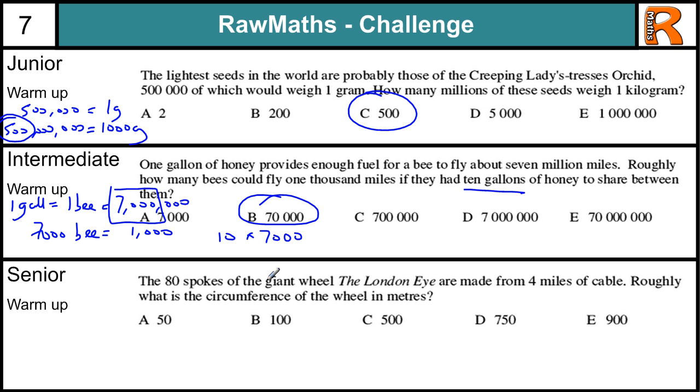The senior warm-up. 80 spokes of the London Eye make up 4 miles of cable. We've got to change this into meters. So 80 equals 4 miles. So one spoke is going to equal 4 over 80 miles, which is 1 over 20. Now on the London Eye, or on any wheel, the spokes are equal to the radius of the wheel. And to work out the circumference of the wheel all the way around the outside, we need the formula circumference equals pi times diameter, or 2 times pi times r, or 2r, because the diameter is twice the radius. So we need to find the radius. So we know that one spoke, which is the radius, is 1 twentieth of a mile. But we need to change that into meters.